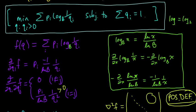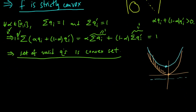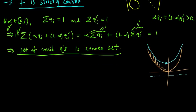Welcome back. We're solving this constrained minimization problem to minimize the expected codeword length. We observed that our objective function f is strictly convex and that the set of valid queues is a convex set. So now we're ready to apply Lagrange multipliers to try to find some critical points of f restricted to that set.